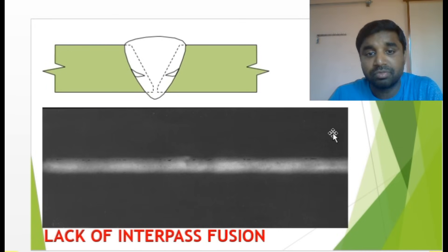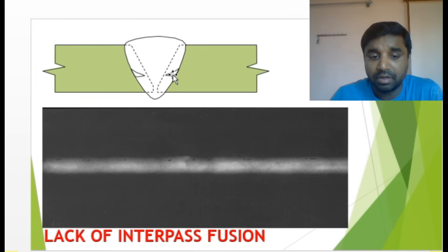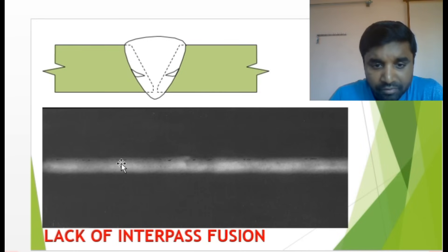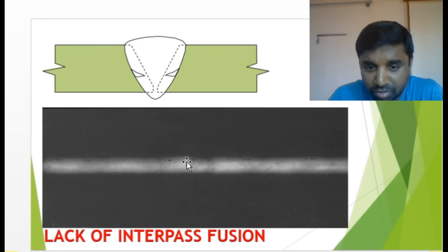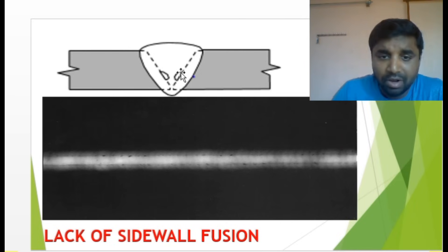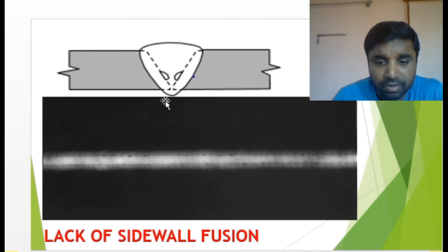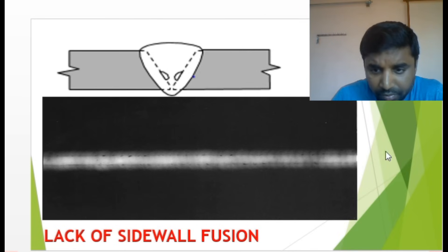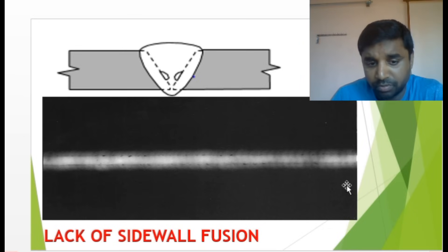Lack of inter-pass fusion — one run is finished and the next run has no fusion between them. In the radiograph, multiple black areas appear showing the fusion was not done. Lack of sidewall fusion — this occurs in the V-joint area where the sidewall is not fused. A continuous black line appears in some areas from the sidewall where fusion did not occur.